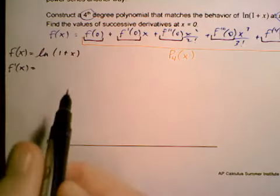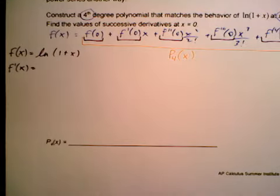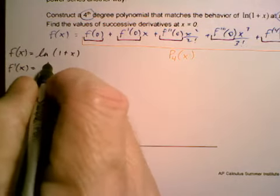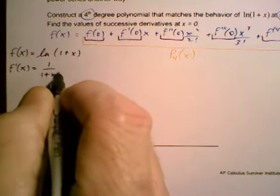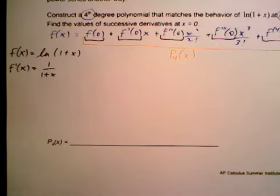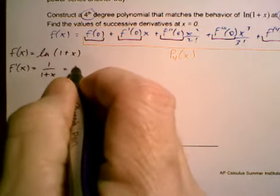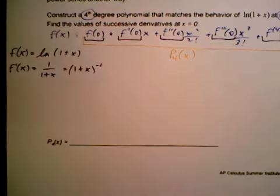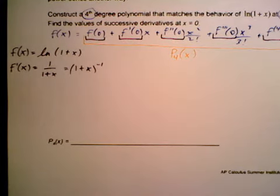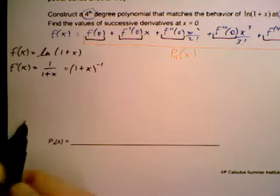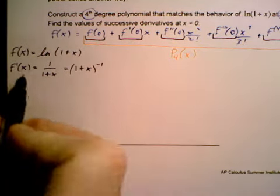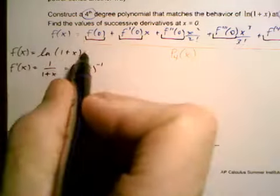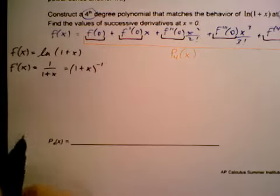The derivative of ln, which is again another reason why I love this chapter, because we get a lot of practice with things that we haven't seen for a while. The derivative of ln of anything is 1 over that anything multiplied by the derivative of that anything, and the derivative of 1 plus x is 1. I'm going to rewrite this in such a way it makes it easier for me to find the derivative. 1 plus x to the negative 1. Alright. I know I need to come up with all these derivatives, so before I plug in 0 and find f of 0 and f prime of 0, I'm going to find the derivatives first.